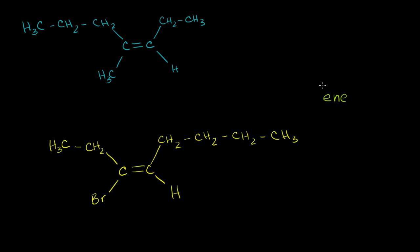And then we need to figure out what the longest carbon chain is, and it looks like it's this one here. One, two, three, four, five, six, seven carbons. So it's going to be hept. It's going to be hept as our prefix on the alkene.